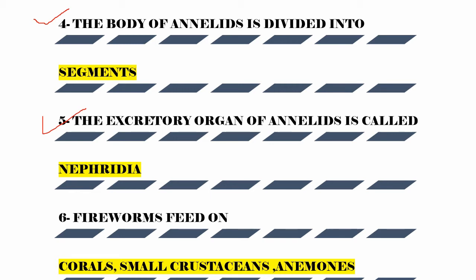What is nephridia? Nephridia is the excretory organ of Annelida. Nephridia is a long tubule-like organ responsible for excretion in Annelids.